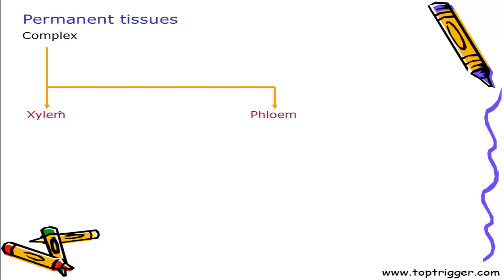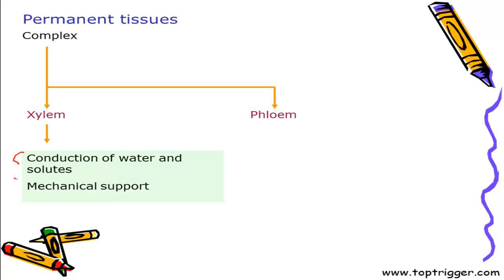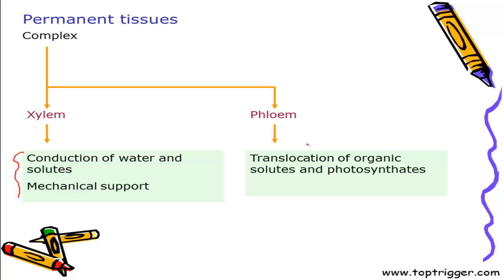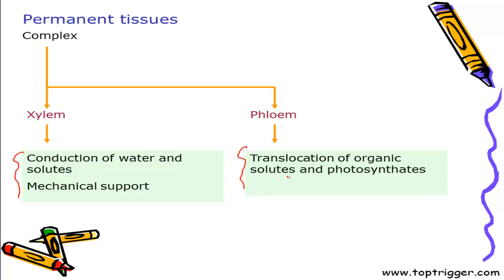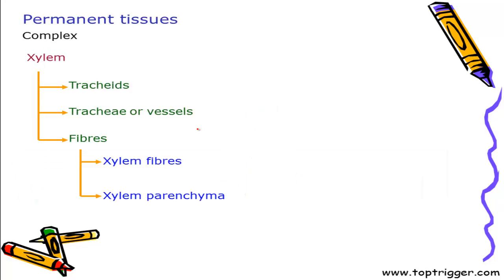Now let's talk about the complex tissues. In case of complex tissues, we have xylem, which is meant for conduction of water and solutes, and phloem, which is meant for translocation of organic solutes prepared by photosynthesis. The components of xylem are tracheids, trachea or vessels, xylem fiber and xylem parenchyma.